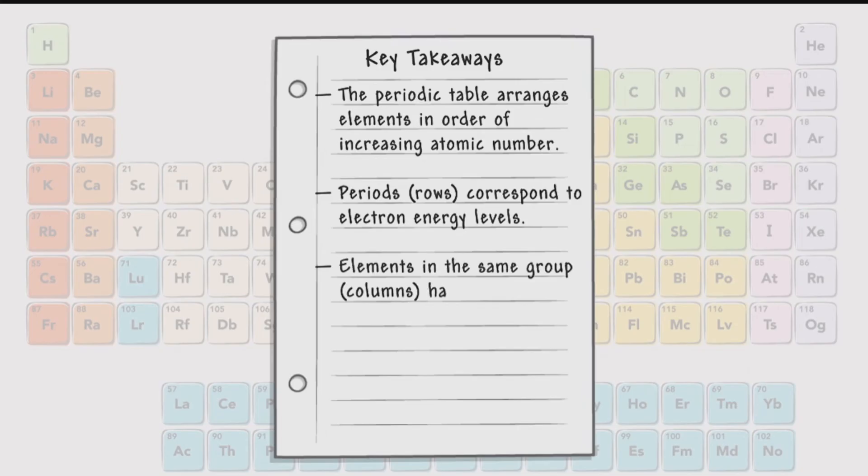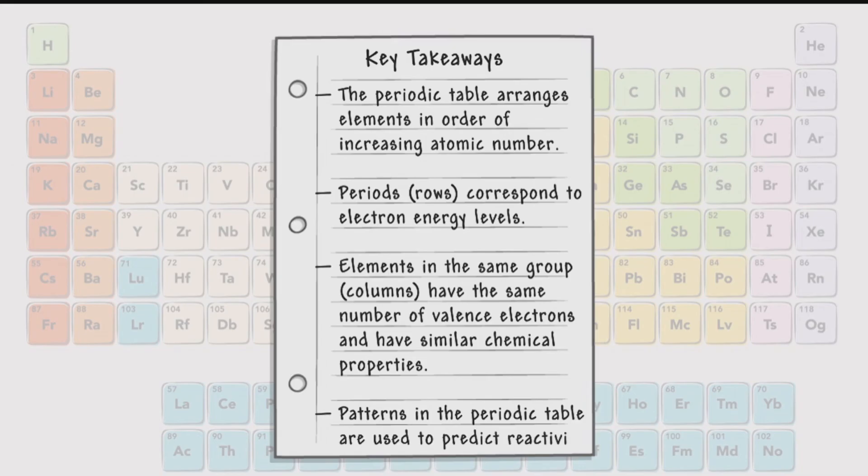Elements in the same group, or columns, have the same number of valence electrons and have similar chemical properties. Patterns in the periodic table are used to predict reactivity.